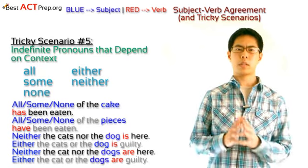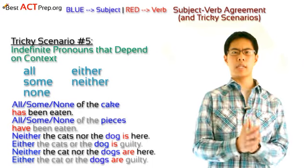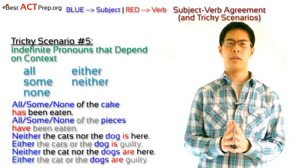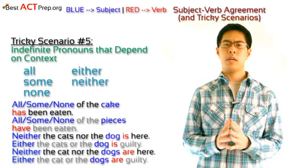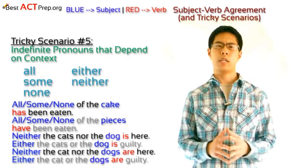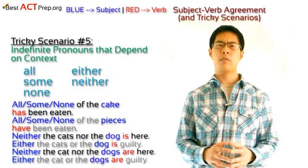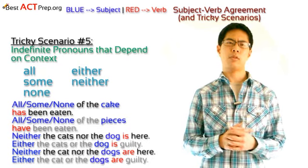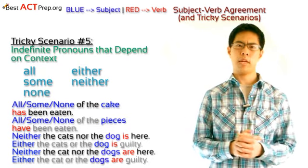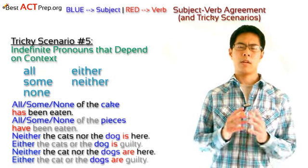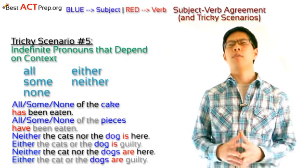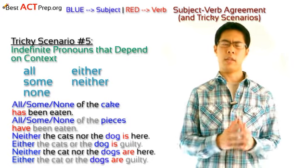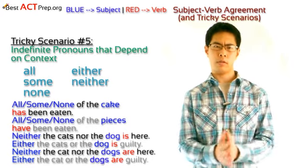For the indefinite pronouns either and neither, they're going to almost always take singular verbs, even though we're going to be very tempted to give them plural verbs because they're referring to more than one thing. The only scenario where they would take plural verbs is if the second noun — the noun that is closer to the verb — is plural.